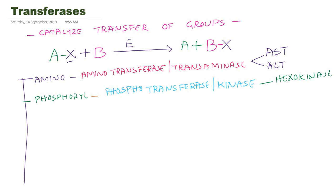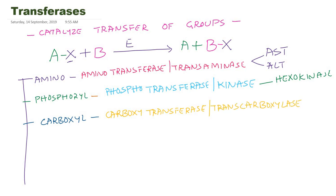The next group involved in Transferase reactions is the carboxyl group, or sometimes the carbamyl group. Such enzymes are called carboxyl transferases, commonly known as transcarboxylase or transcarbamylase. An example for this particular enzyme is methylmalonyl-CoA carboxyl transferase.